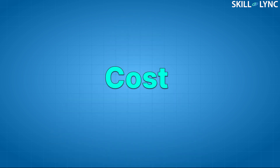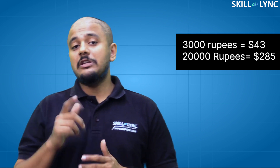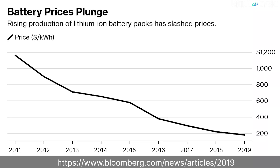The next parameter is cost — one in which lead-acid batteries outperform lithium-ion batteries. Lead-acid batteries cost less than half the price of lithium-ion batteries for similar performance. A lead-acid SLI battery costing 3,000 rupees can cost as high as 20,000 when choosing lithium-ion chemistry. However, the price of lithium-ion batteries is reducing at an average of 15 percent per year, falling from 1,200 dollars per kilowatt-hour to just 150 dollars per kilowatt-hour in 2019.